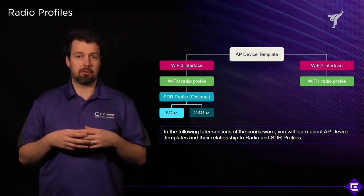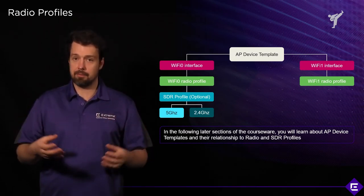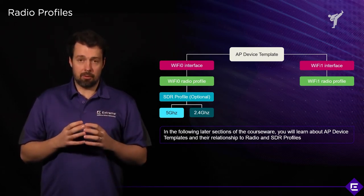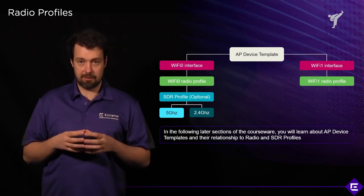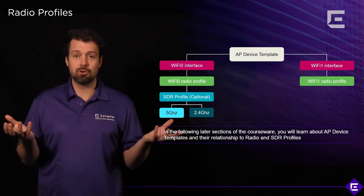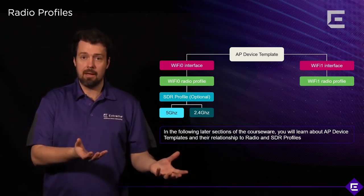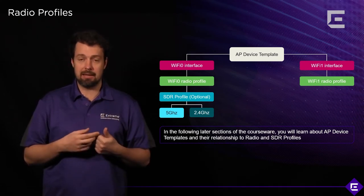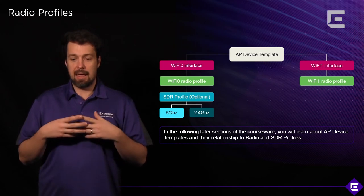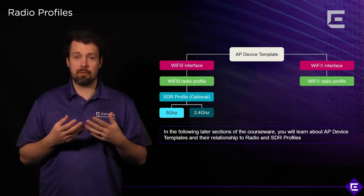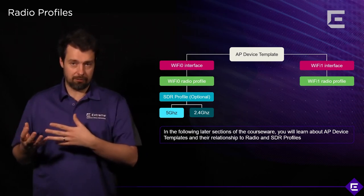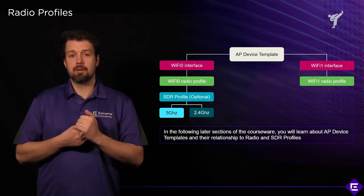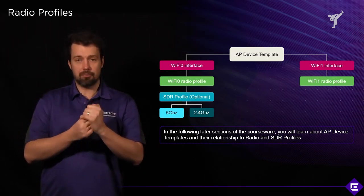Device templates are used to configure multiple physical devices and their interfaces across a floor, building, campus, or multiple global deployments. An AP device template does two things: it configures the physical Ethernet ports of the AP — including management VLAN and native VLAN — and on the Wi-Fi side it configures the Wi-Fi 0 interface and the Wi-Fi 1 interface.